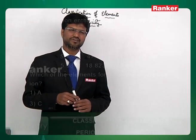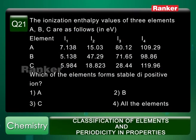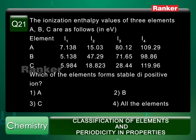Then element C: I1 is 5.984, I2 is 18.823, I3 is 28.844 and I4 is 119.96. Here, there is a large difference between I3 and I4. So this element is supposed to have three valence electrons.